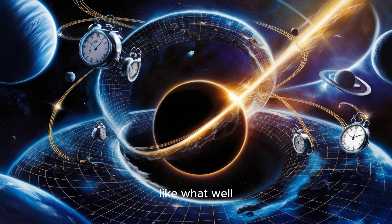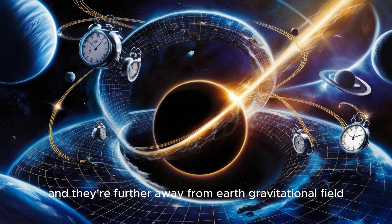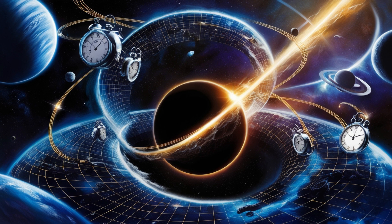Oh really? Like what? Well, think about GPS. GPS satellites, they're orbiting Earth at really high speeds, and they're further away from Earth's gravitational field compared to us down here on the surface. And those two things, the speed and the weaker gravity, they actually cause the clocks on GPS satellites to tick slightly faster than clocks here on Earth.